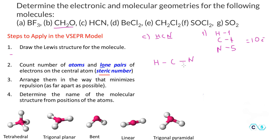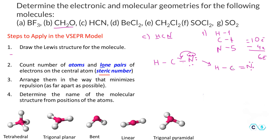Using 4 electrons for the two bonds, we have 6 electrons left, placed as 3 lone pairs on nitrogen. Checking octets: carbon only has 4 electrons from 2 bonds, so we move a lone pair from nitrogen to form a double bond. Carbon still has only 6 electrons, so we move another lone pair to form a triple bond: H–C≡N with one lone pair on nitrogen. Now carbon and nitrogen both have an octet.